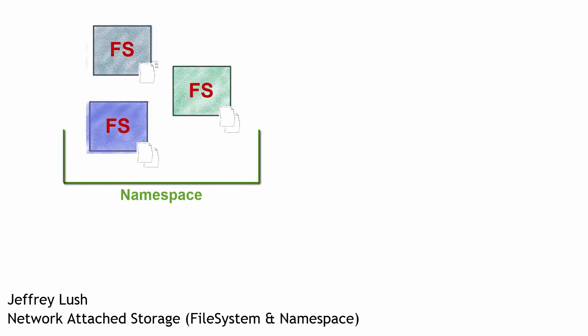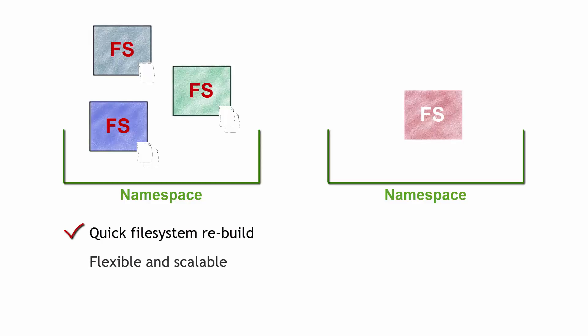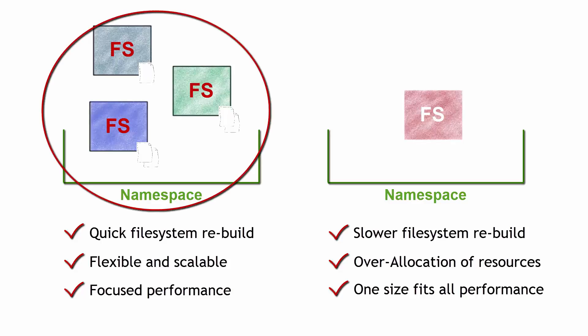If you're looking at network attached storage, there is a difference in how the file system and namespace works within the system. Without getting overly technical, there are multiple file systems — NFS, for example, is common in network attached storage, NTFS is common in Windows servers. Depending on the hardware and the operating system, you'll have different types of file systems associated with them.